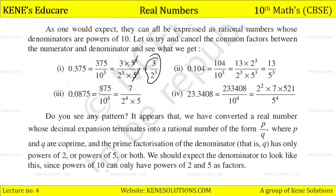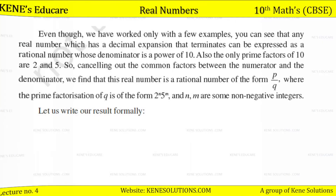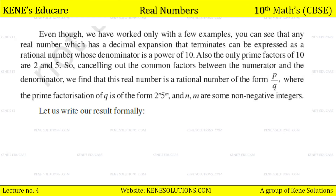It appears that we have converted real numbers whose decimal expansion terminates into rational numbers of the form p by q, where p and q are co-prime and the prime factorization of q has only powers of 2, or powers of 5, or both. This makes sense since powers of 10 can only have powers of 2 and 5 as factors. So such a real number is a rational of the form p by q where q = 2 to the power n × 5 to the power m, and n, m are non-negative integers.